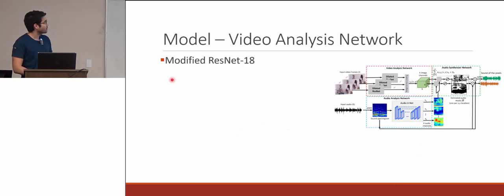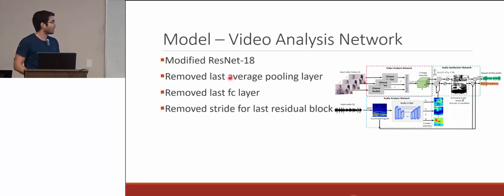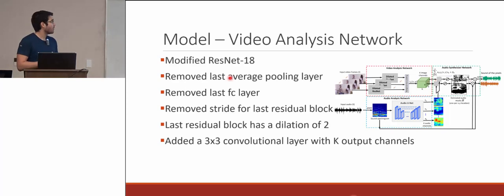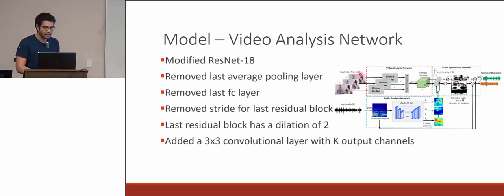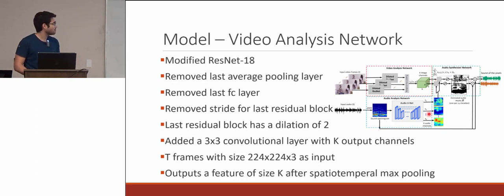For the video analysis network, they modified ResNet-18 by removing the last average pooling layer, the last fully connected layer, and the stride for the last residual block. They made the last residual block have a dilation of two and added a 3x3 convolutional layer with K output channels — this convolutional layer's output is the output of the video analysis network, matching the same number of channels as the audio analysis network. The input is RGB images of T frames at 224 by 224 by 3, outputting K image features after spatiotemporal max pooling.